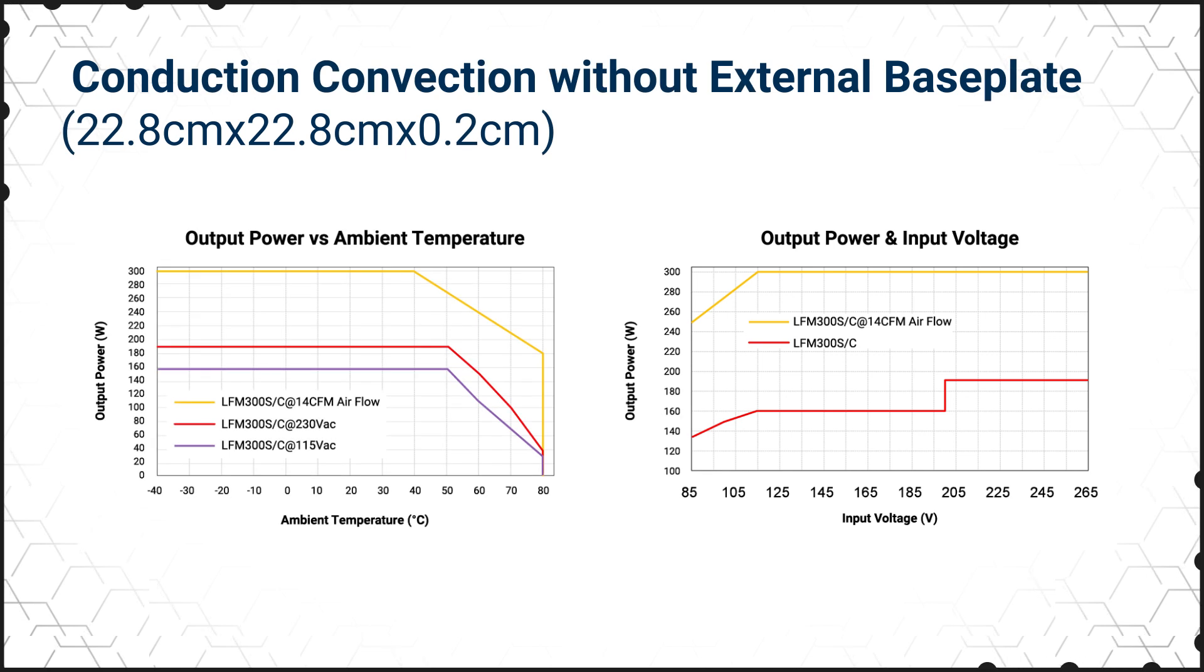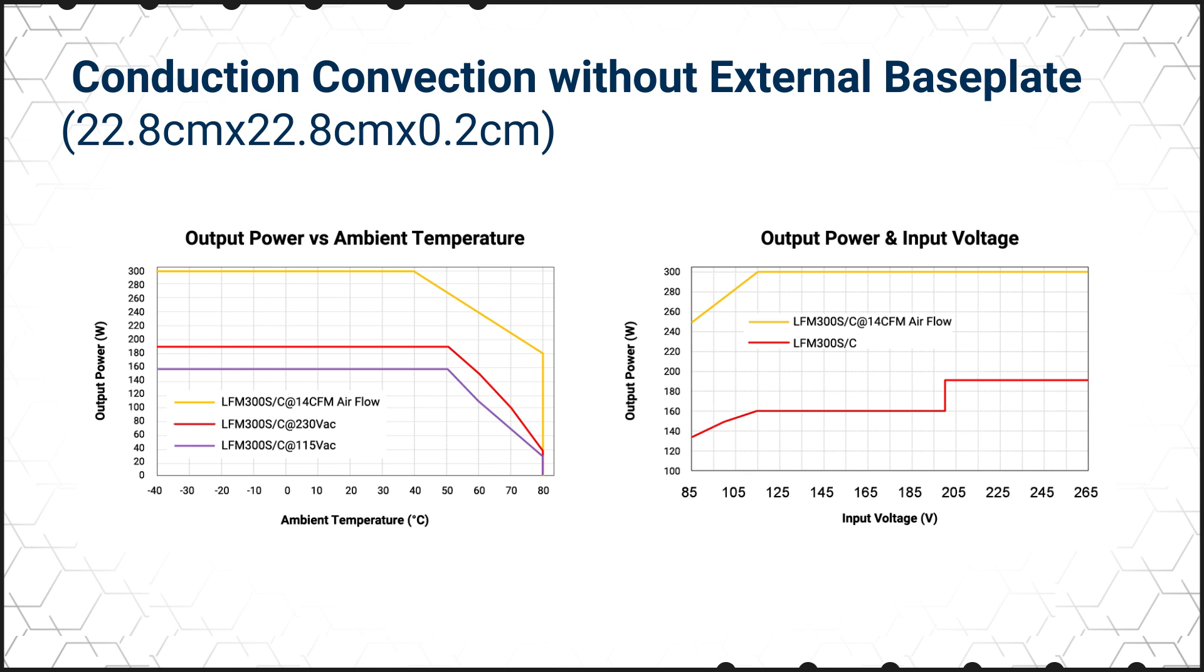To use the full 300 watt output range, an external fan providing 14 CFM of airflow across the power supply is needed, with V rating for ambient temperatures up to 80 degrees Celsius.